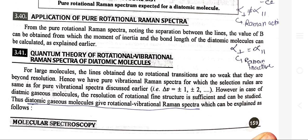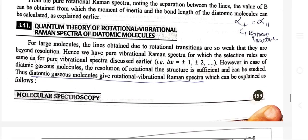Quantum theory of rotational-vibrational Raman spectra of diatomic molecules: for large molecules, lines obtained due to rotational transitions are so weak that they are beyond resolution. Hence we have pure vibrational Raman spectra, for which the selection rules are the same as pure vibrational spectra. However, in the case of diatomic gaseous molecules the resolution of rotational fine structure is sufficient and can be studied. Thus diatomic gaseous molecules give rotational-vibrational Raman spectra.